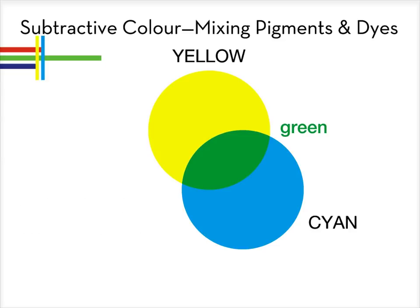Yellow ink absorbs the blue light. Cyan ink absorbs the red light. Green is a subtractive secondary color achieved by mixing two primaries.